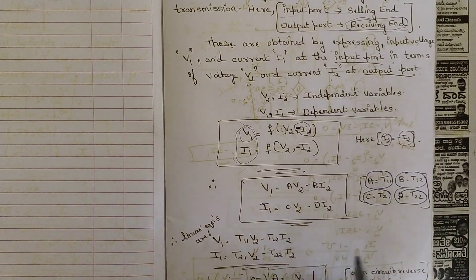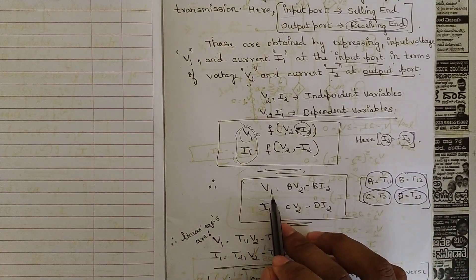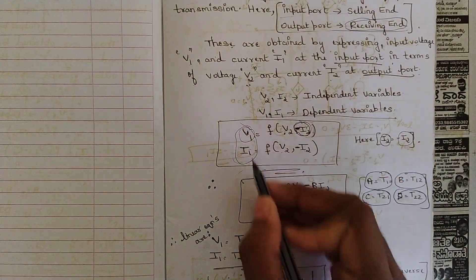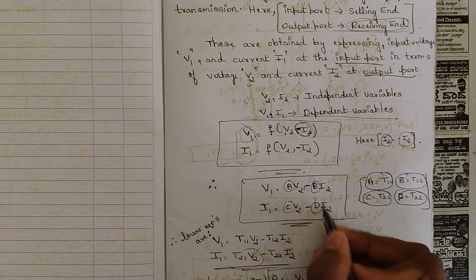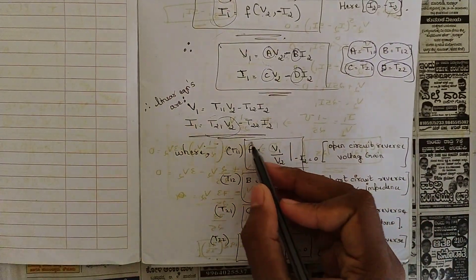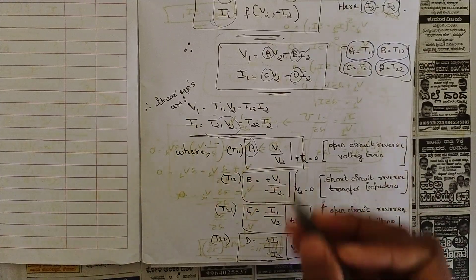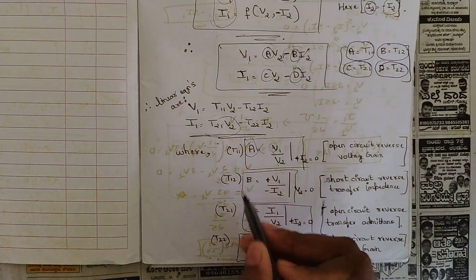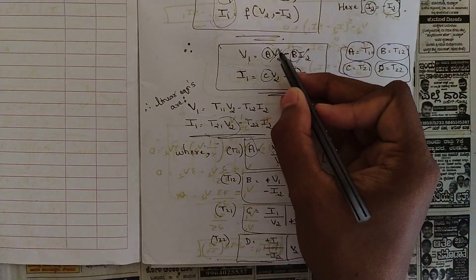We represent these in equation form: V1 = AV2 − BI2, and I1 = CV2 − DI2. Note the minus signs because we have minus I2. Our goal is to find the individual values of A, B, C, and D. The value of A is found when I2 = 0, giving A = V1/V2. When V2 = 0, we get B = V1/(−I2), which equals minus V1 divided by I2.